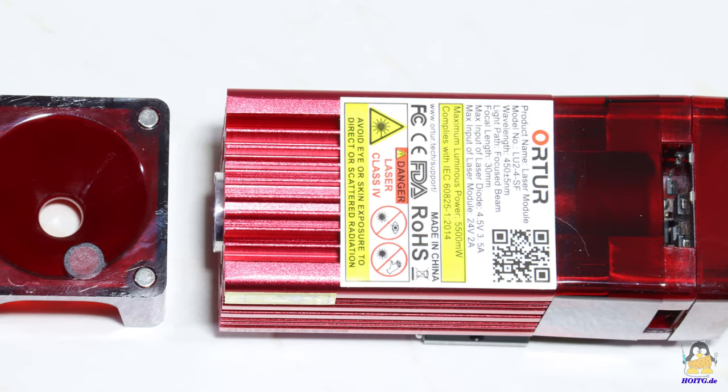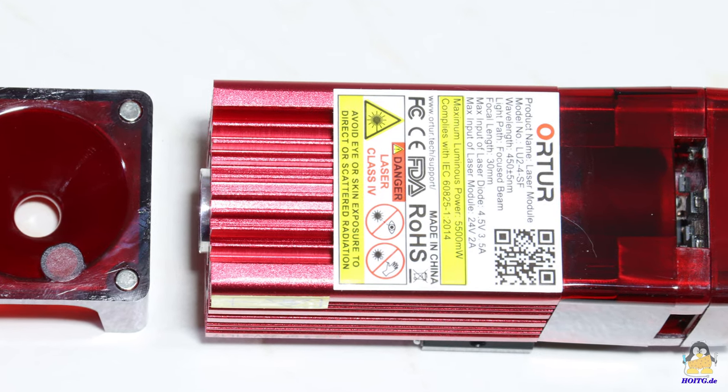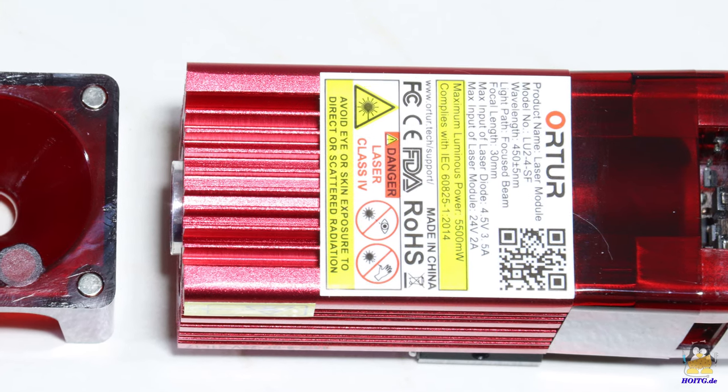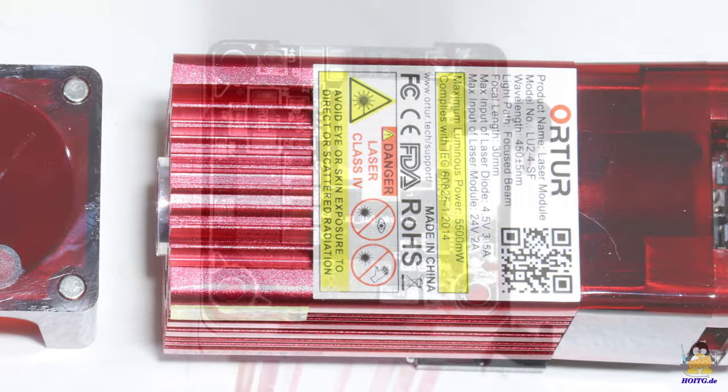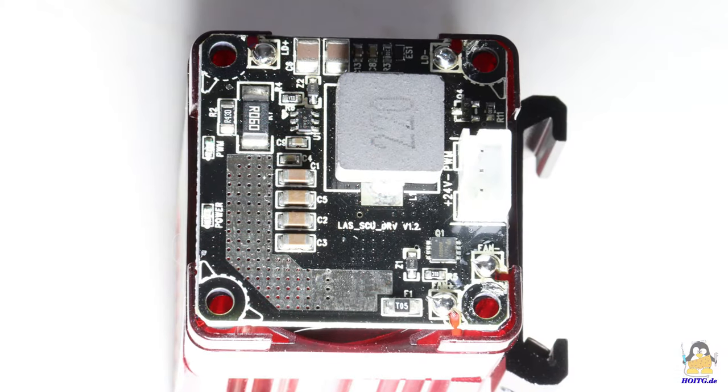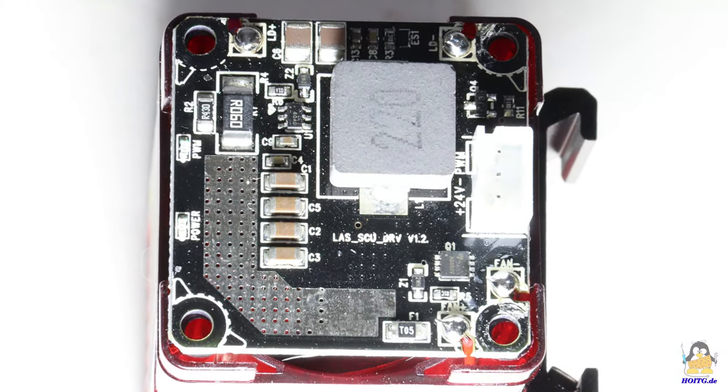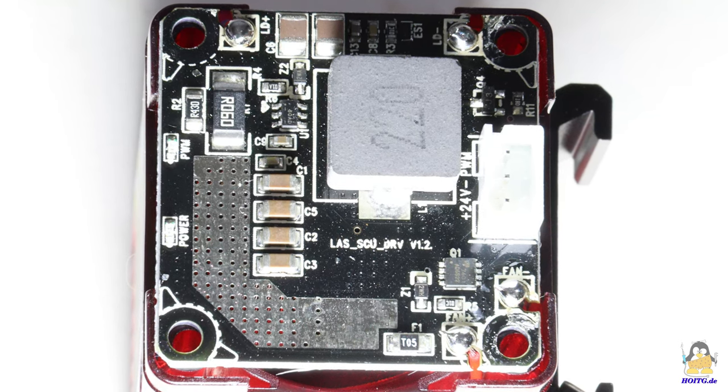The laser module is type LU-4SF. SF stands for short focus, meaning a focal length of 30mm. The maximum laser power delivered by the built-in diode is 5.5W while consuming an electric input power of around 16W.